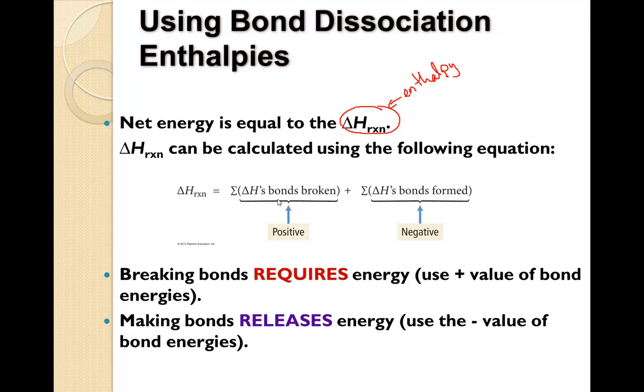The bonds broken added to the bonds formed. However, when we're forming bonds, that's going to be negative because it releases energy, because the atoms are becoming more stable. So it's really like saying the bonds broken, which are the reactants, minus the bonds formed, which are the products.